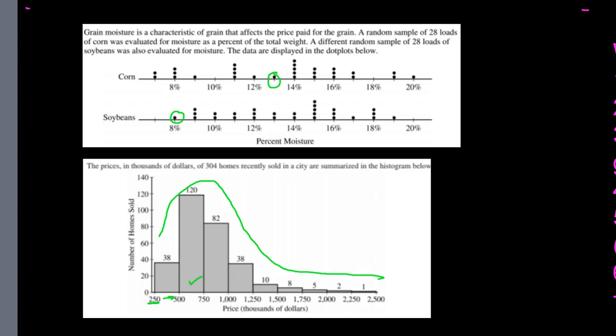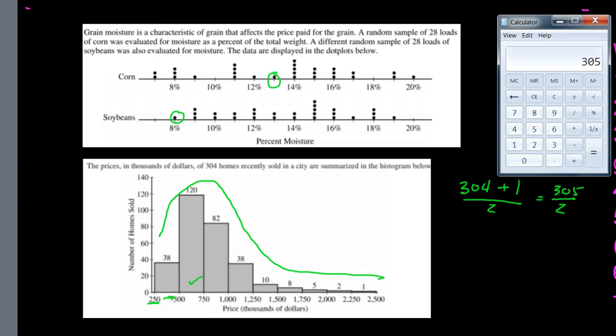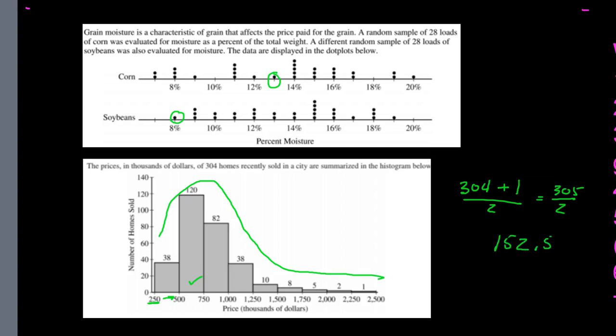A common question when you see a graph like this is locating the median. You won't be able to find the exact median, but you can roughly find where it falls. Use the formula: (n + 1) / 2, so (304 + 1) / 2 = 305 / 2 = 152.5. That means we're looking for the value halfway between the 152nd and 153rd data points.